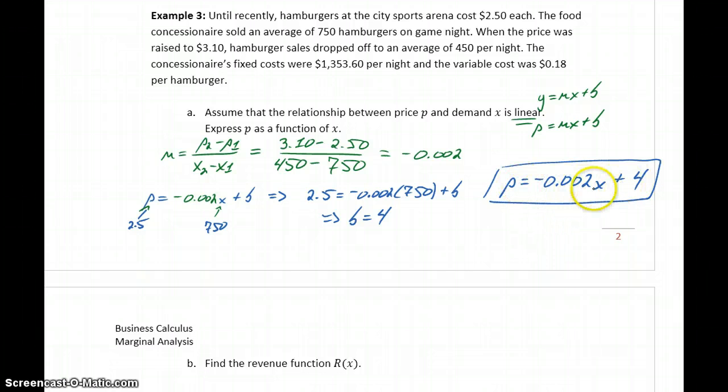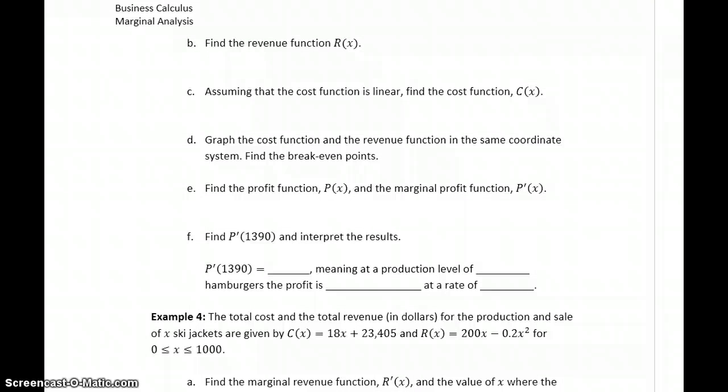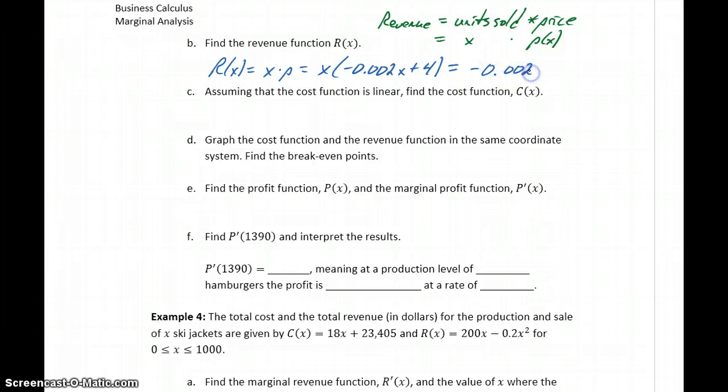So our linear relationship between price and demand can be described as P equals negative 0.002X plus 4. In some examples, we'll be given this price-demand equation. In other cases like this one, we may have to derive that from the given information. The next thing we want to do in part B is find the revenue function. Something to keep in mind is that revenue is always your units sold times the price that you sold them at, which in this case could be represented as X times P of X, so that function that we just came up with in part A. So in this case, our revenue function X times P will be X times negative 0.002X plus 4, or distributing that through, we get negative 0.002X squared plus 4X.